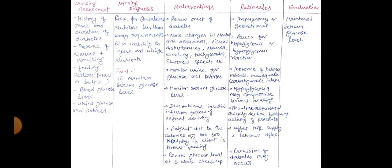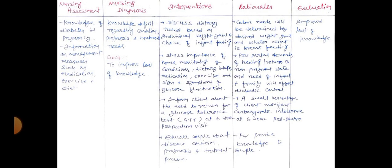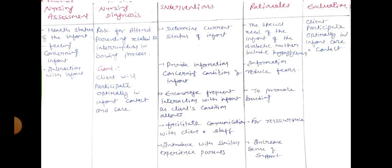Summary of all four nursing diagnoses for postpartum diabetes mellitus: First, risk for imbalanced nutrition less than body requirements related to inability to ingest and utilize nutrients — goal: maintain serum glucose level. Second, risk for injury related to uterine atony and hemorrhage — goal: reduce risk for injury. Third, knowledge deficit regarding condition, prognosis, and treatment needs — goal: improve level of knowledge. Fourth, risk for altered parenting related to interruption in the bonding process — goal: client will participate optimally in infant contact and care.